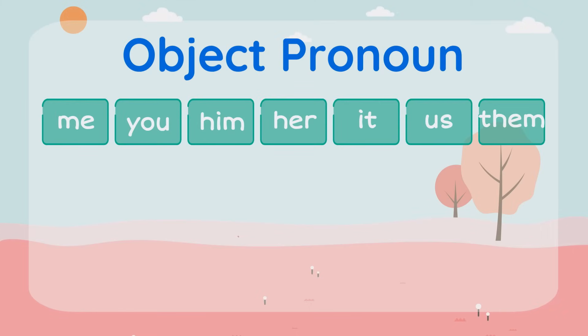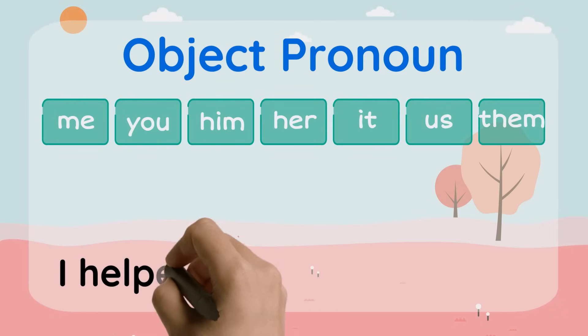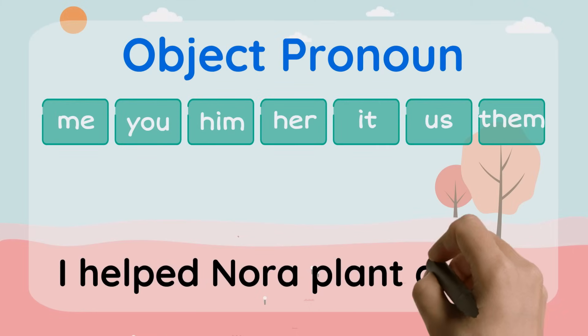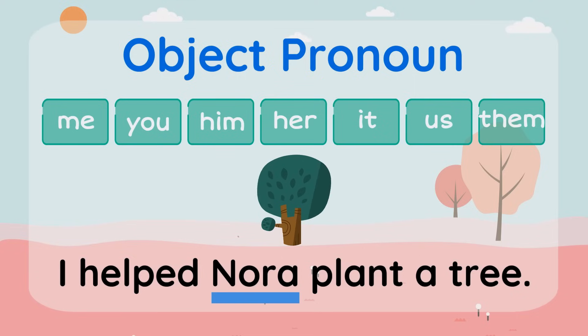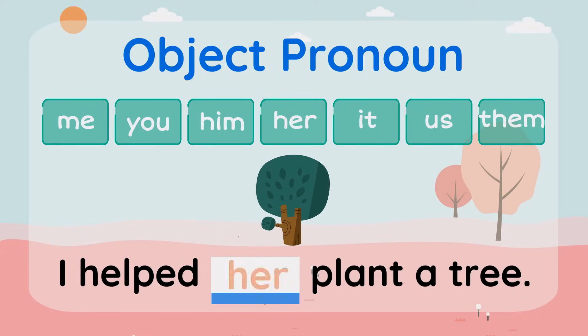Shall we look at some more examples? I helped Nora plant a tree. Nora is a girl, so we're going to replace it with the pronoun her. I helped her plant a tree.